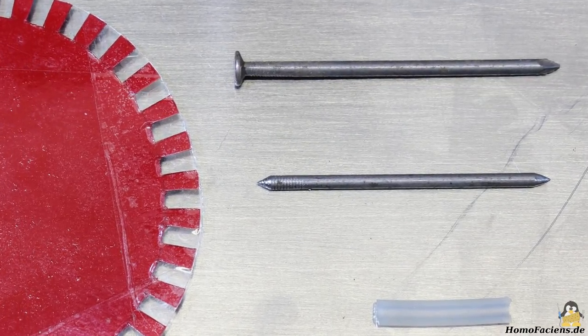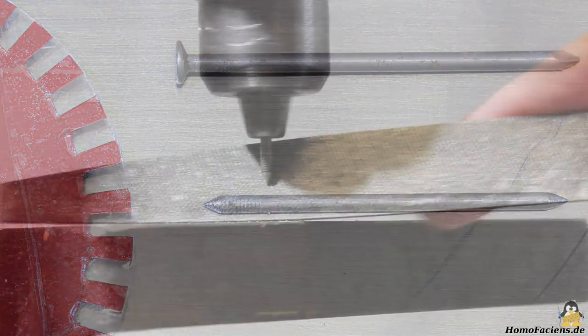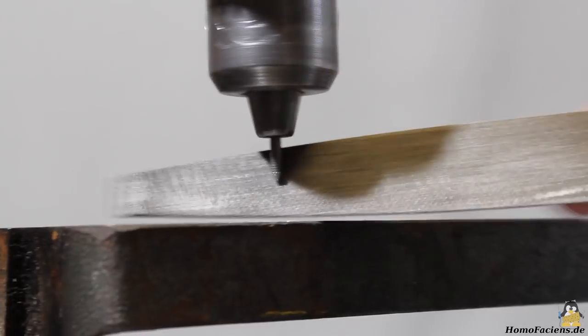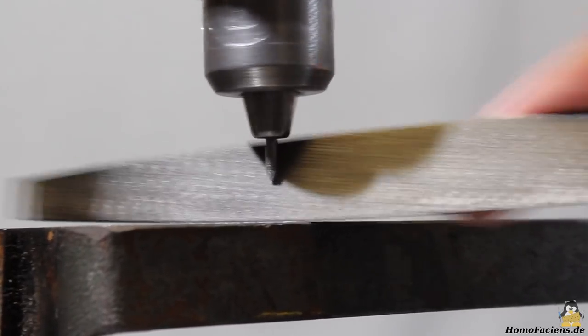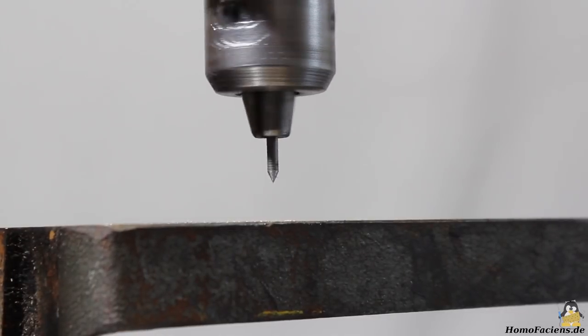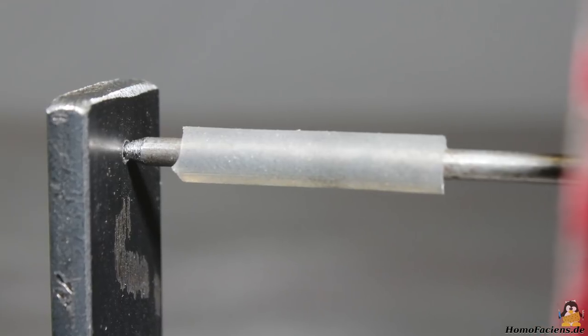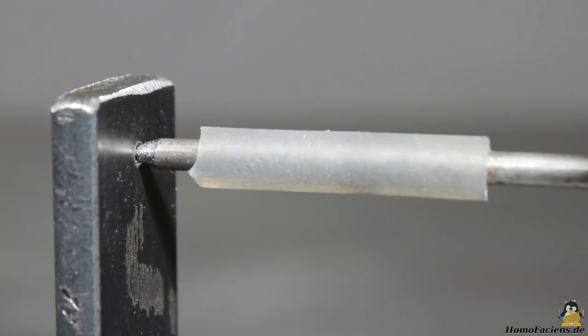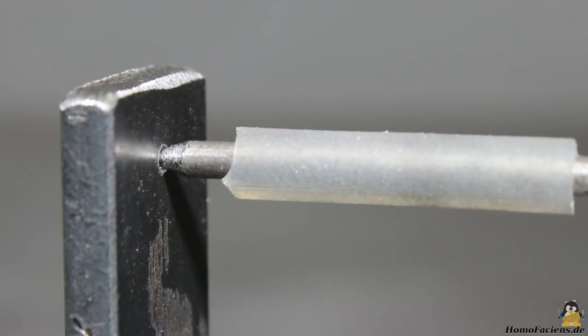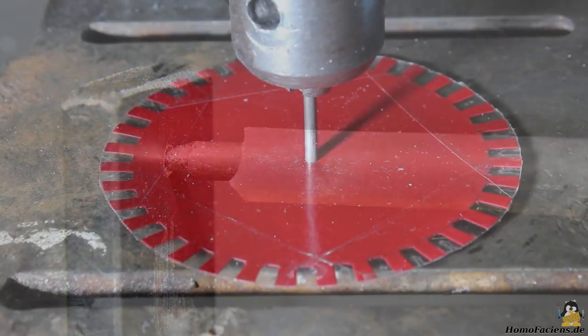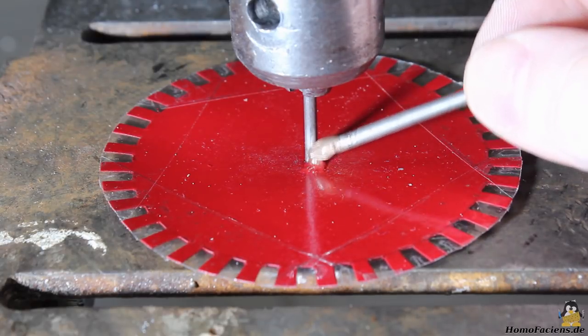The axis is made of a 2.5mm nail. I pointed both ends with my drill press and a file. A piece of rubber tube, usually used as fuel pipe for model engines, gives the axis higher friction when rolling on a metal surface. Epoxy keeps the sensor wheel on the axis.